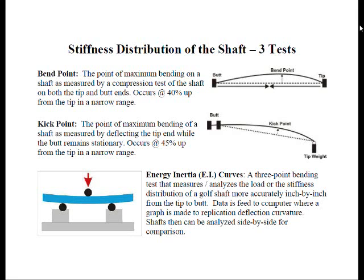When we talk about bend point and kick point, usually a high bend point shaft is one where it has a firm tip and a flexible butt end. A low bend point or kick point shaft is just the opposite. The tip is flexible and the butt is firm. Whereas a mid bend point, there's more of an even stiffness distribution throughout the shaft.